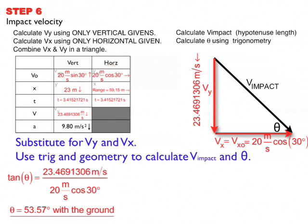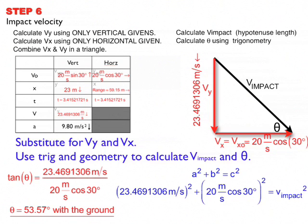To find the magnitude, I'm going to use Pythagorean's theorem. A squared plus B squared equals C squared. So 23.469 meters per second squared plus 20 meters per second cosine 30 squared equals the impact velocity squared. And when I do the math, I get an impact velocity of 29.17 meters per second.